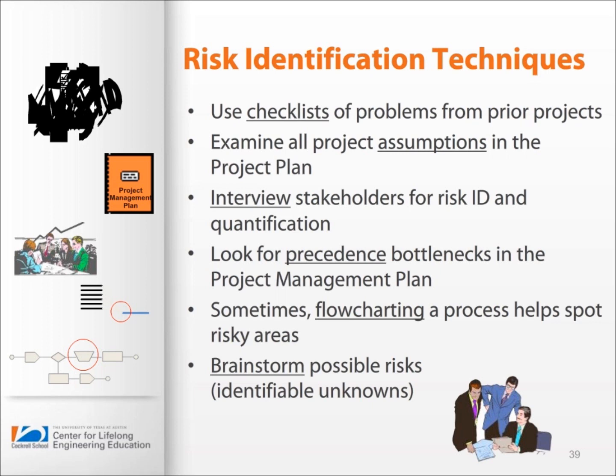Look for precedents, bottlenecks, and dependencies where risk may exist. What happens if you don't get a delivery on time and what does it affect downstream? Flow charting a process using diagrams can also help you identify a risk area or a bottleneck.